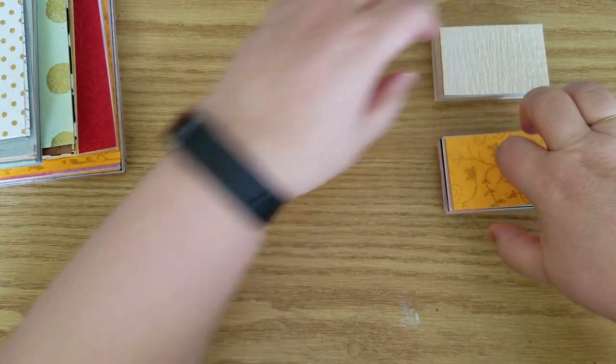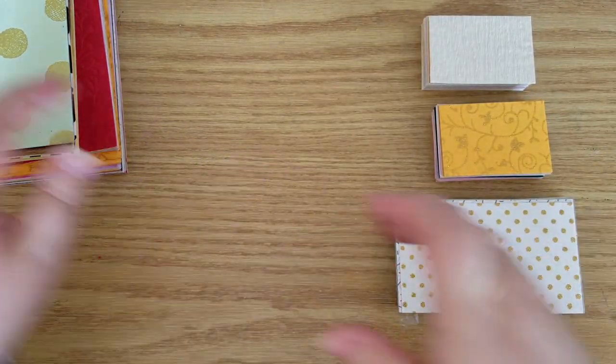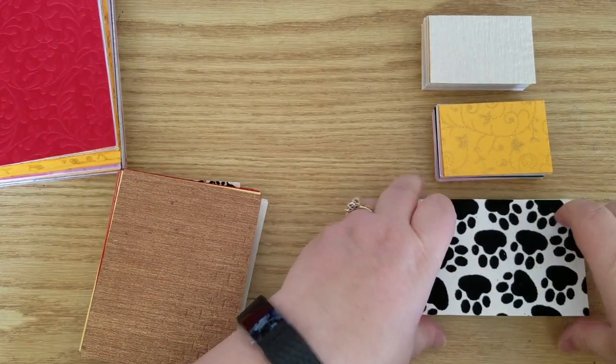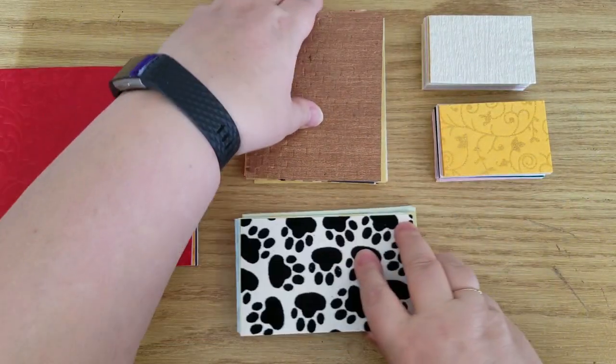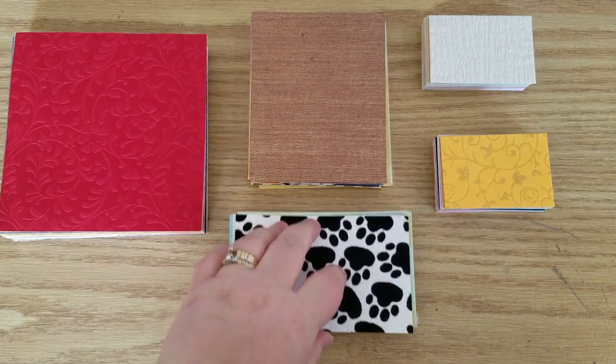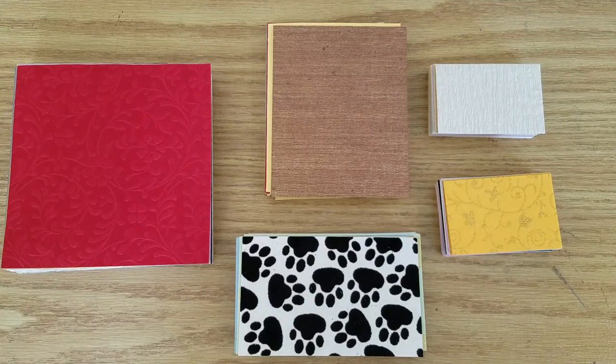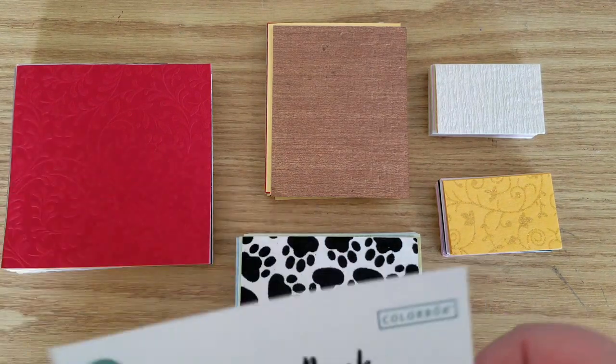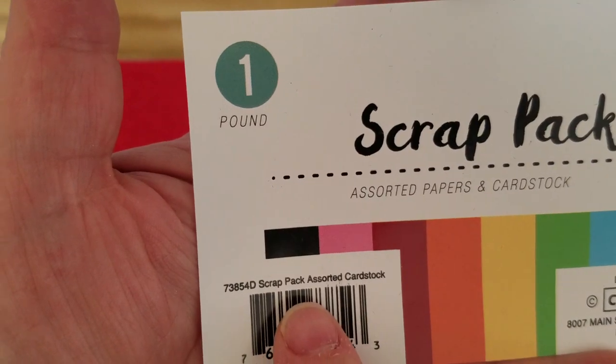This cool little paper pad, I really like this. There's all kinds of fun papers in here. So there we have it, a whole collection of all kinds of papers that I picked up in a scrap paper pack from Walmart. That's the label on it. Scrap pack, assorted cardstock.